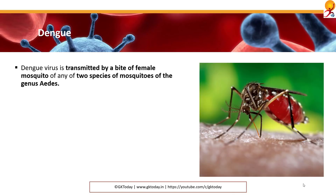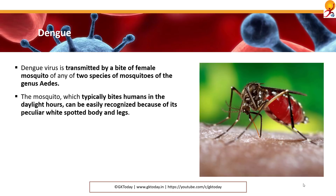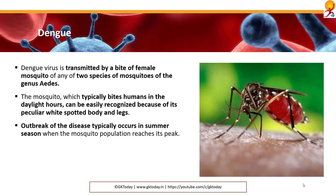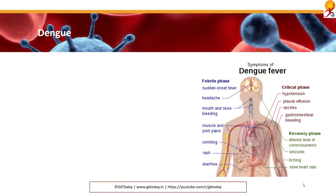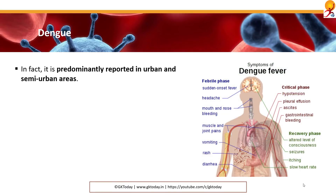Dengue virus is transmitted by the bite of a female mosquito of any of two species of the genus Aedes. The mosquito, which typically bites humans in daylight hours, can easily be recognized because it has peculiar white-spotted bodies and legs. Outbreaks of the disease typically occur in summer because the mosquito population reaches its peak. Unlike malaria, which is a major health concern in rural areas, dengue is equally prevalent in urban areas — in fact, it usually happens more in urban and semi-urban areas.